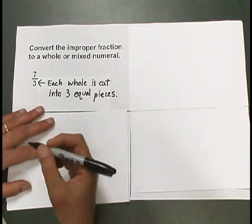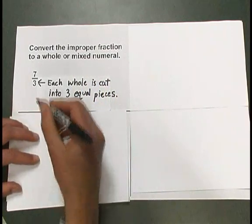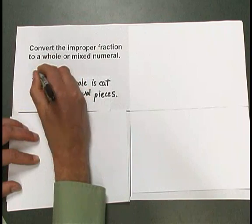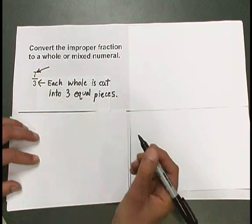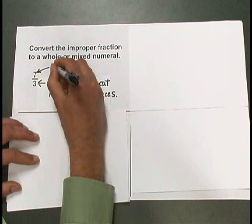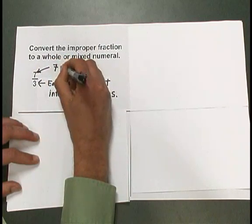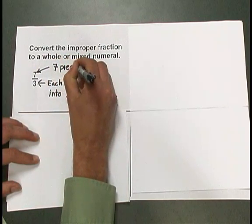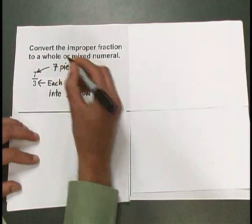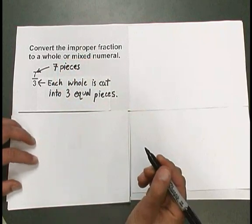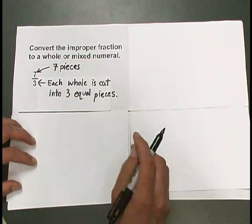The 7 above in the numerator tells us that we're considering 7 total pieces. We're going to do this problem three different ways.